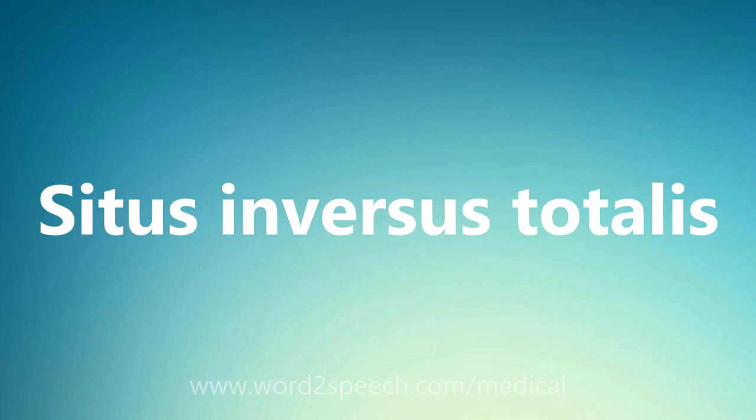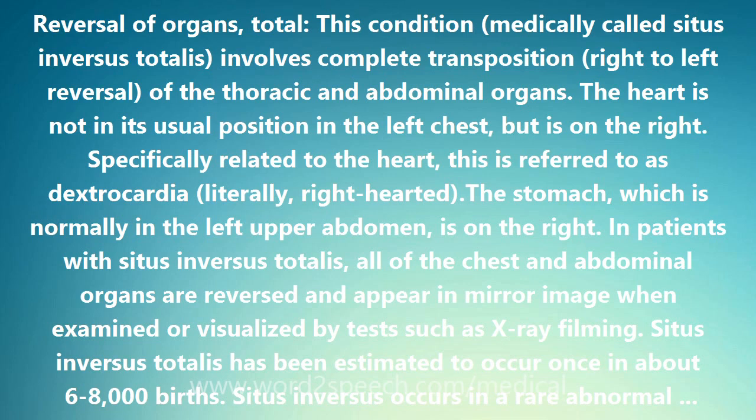Situs inversus totalis. Reversal of organs, total — this condition, medically called situs inversus totalis, involves complete transposition, right to left reversal, of the thoracic and abdominal organs.